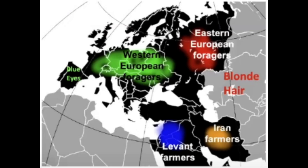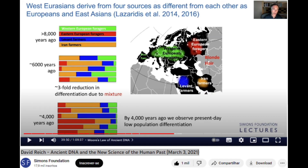Presented are four groups from ancient DNA research by David Reich — green, red, blue, and brown — of which at least two are boomers or groups of Y-DNA R1 that appeared roughly 8,000 years ago in western Eurasia.